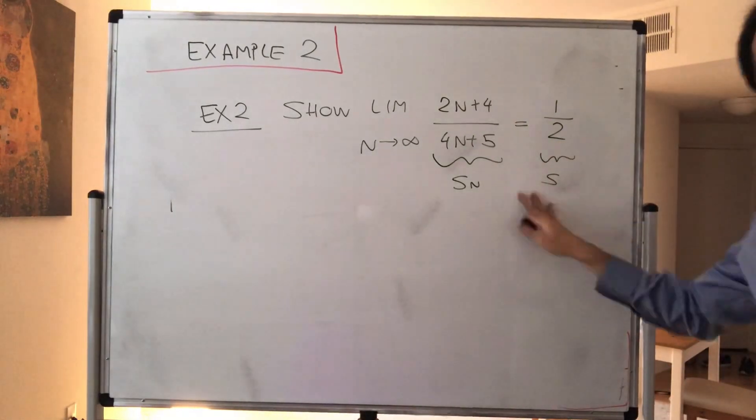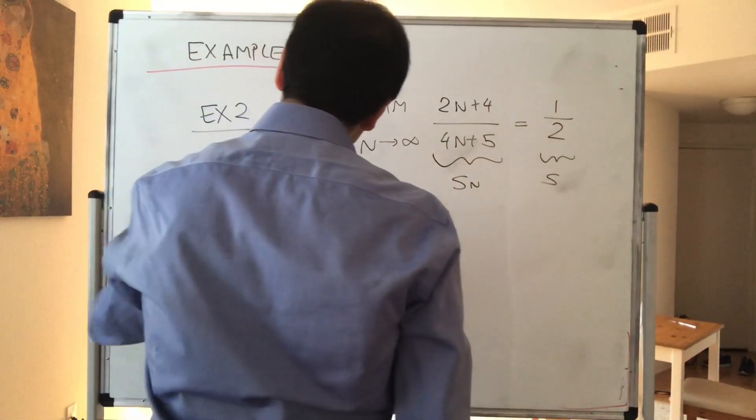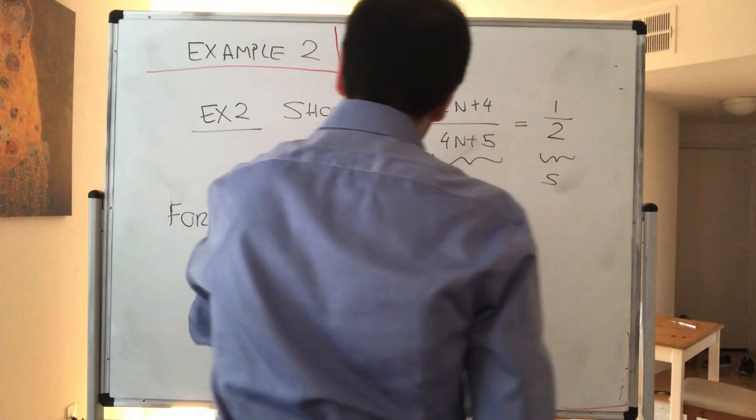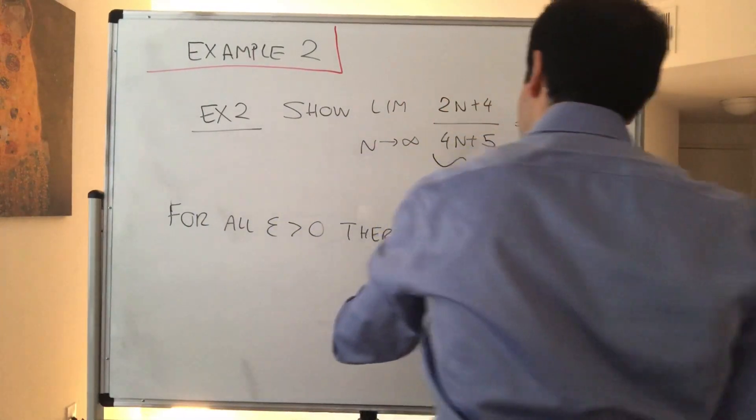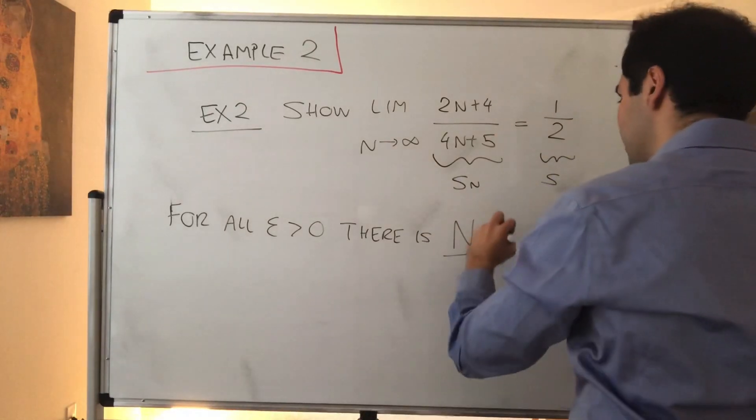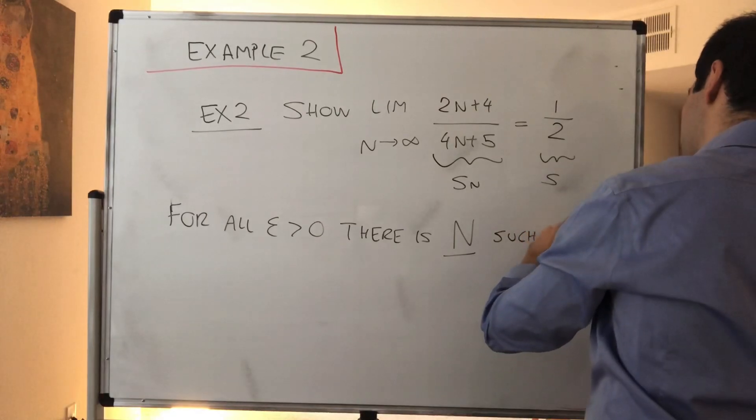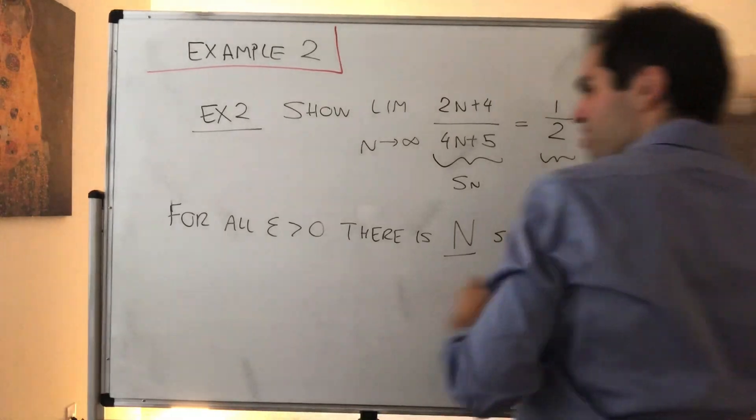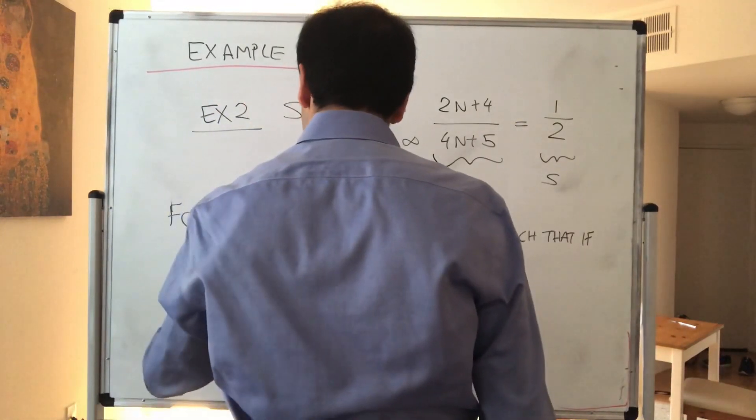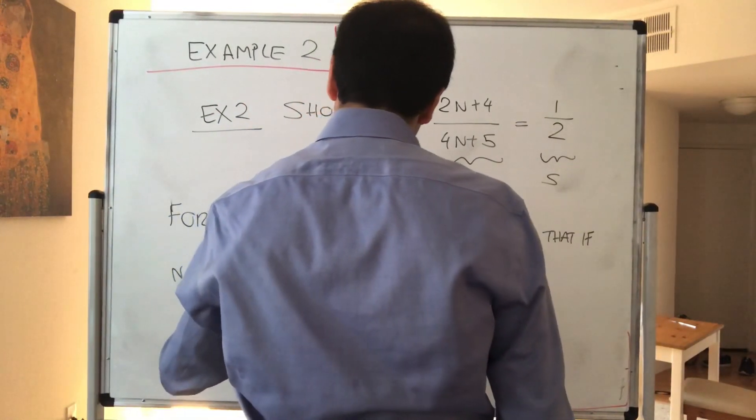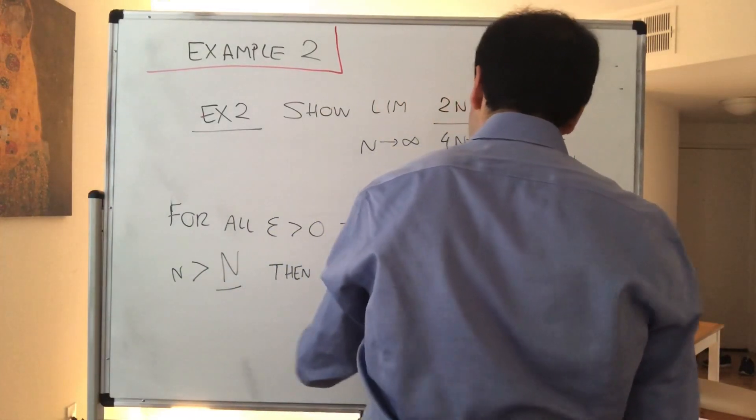What does that mean for Sn to go to S? I would like to remind you that the definition is for all epsilon positive, there is some threshold capital N, which I'll underline here, such that if you reach that threshold, so if you go beyond this, if n is greater than capital N,